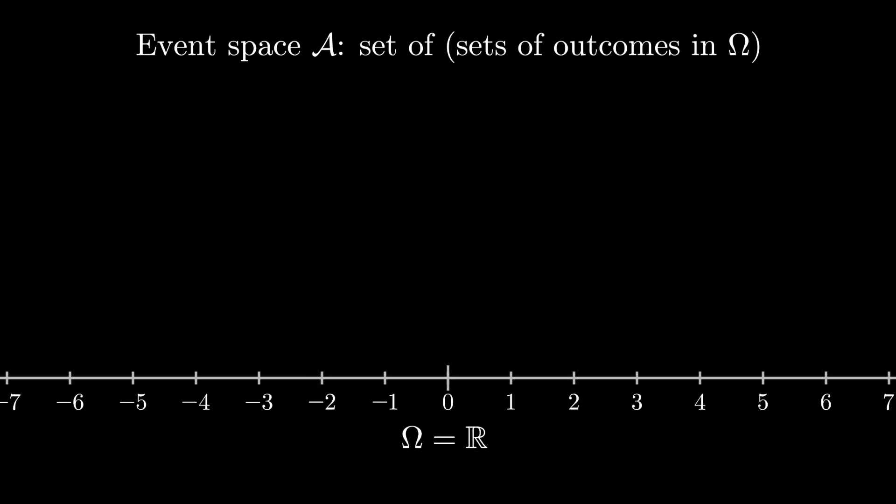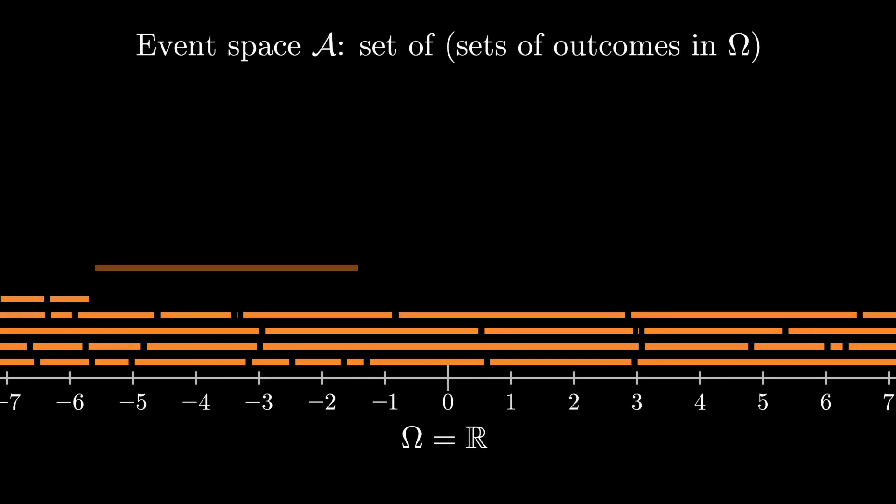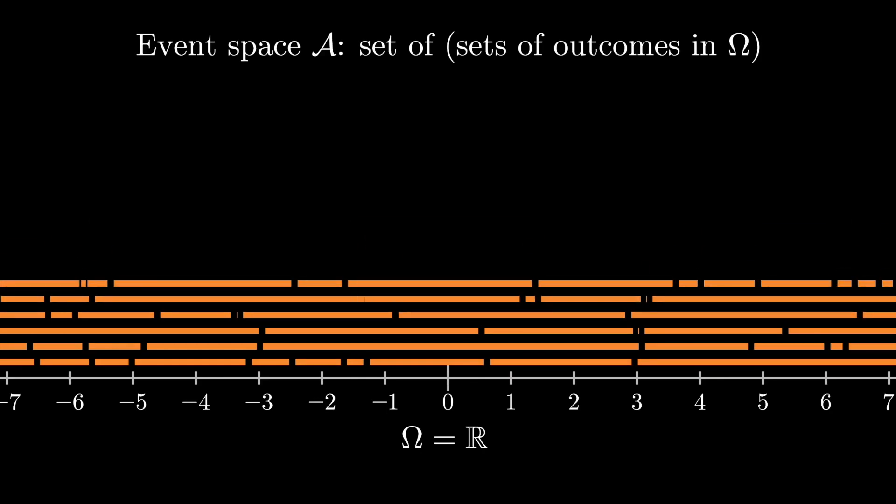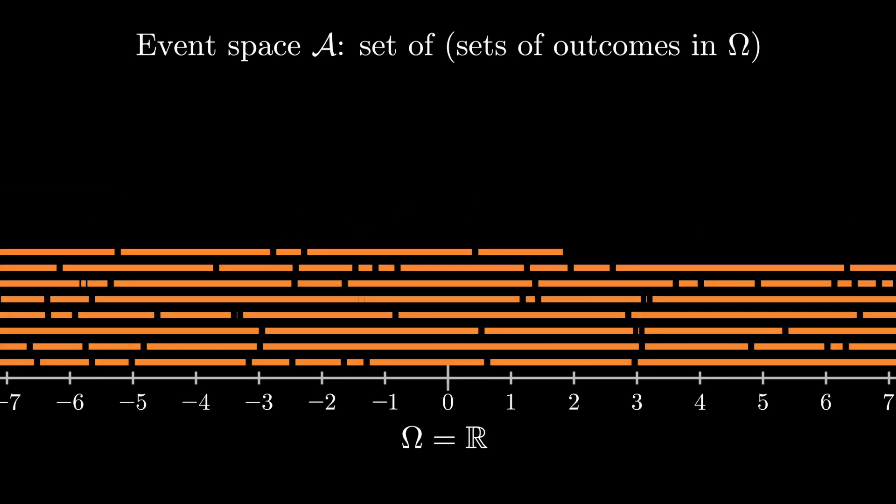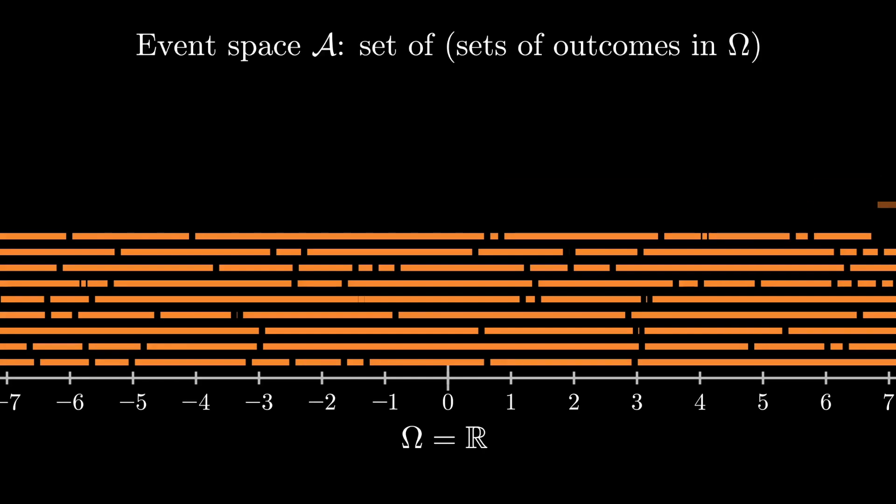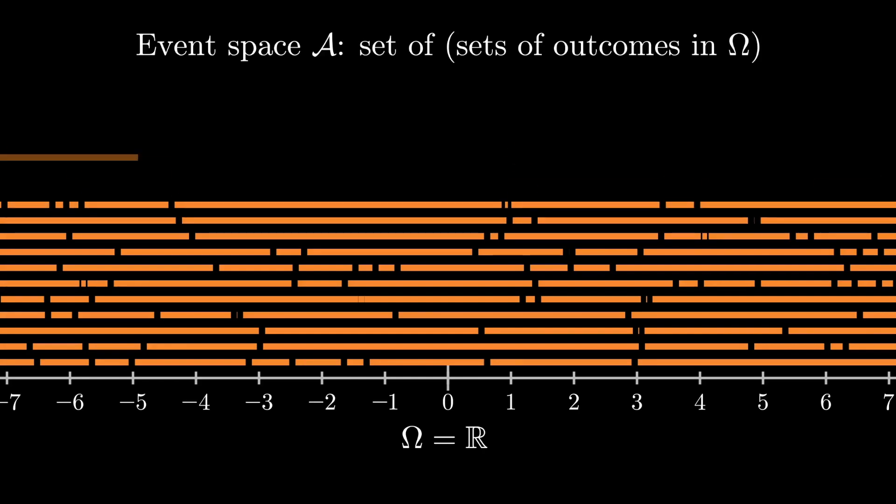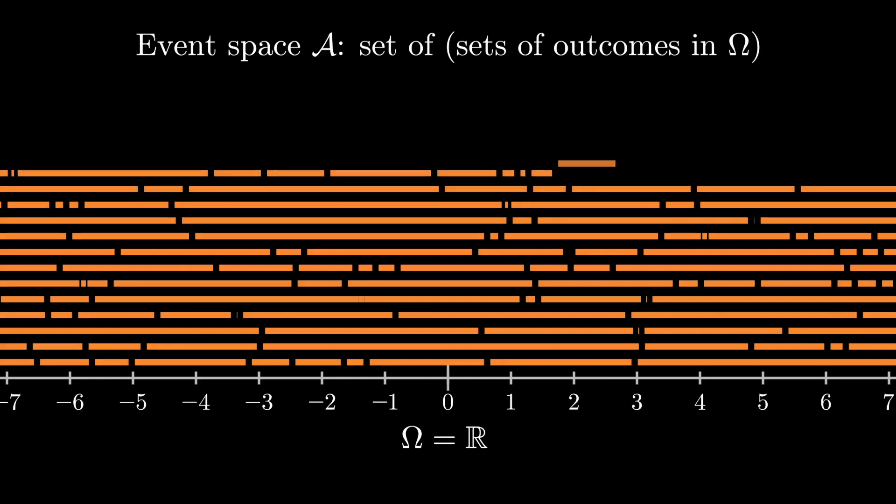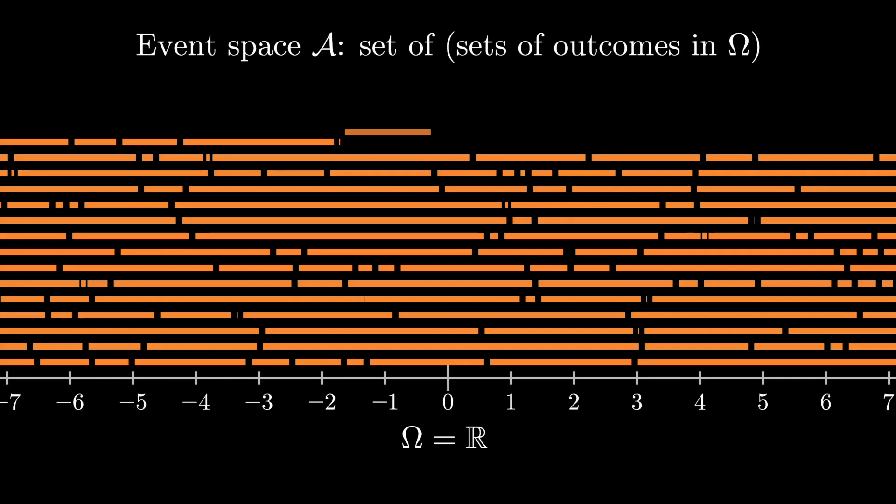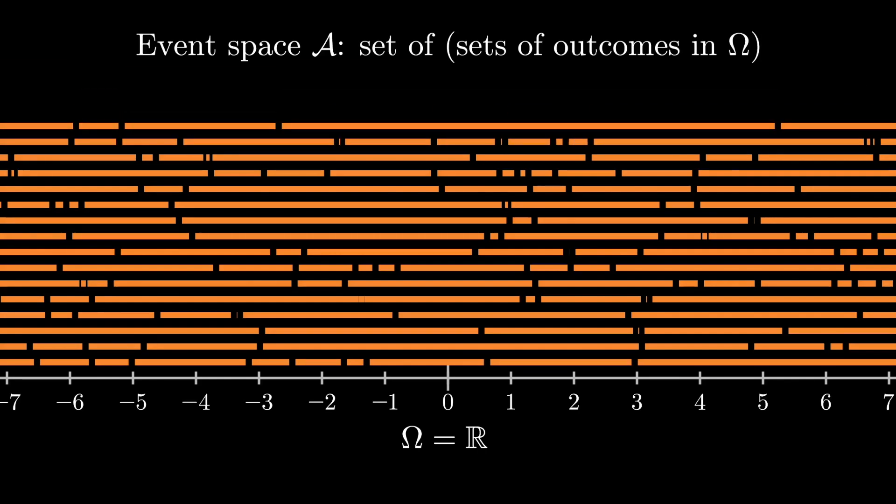Thinking rigorously about event spaces and sigma algebras for the real line and other continuous spaces turns out to be a little bit more involved. The mathematical area of measure theory is in part motivated by these kinds of problems. We're not going to do any measure theory here, and we're going to assume that your intuitive notions of integration basically work out. If our sample space is something like the real line, then the main thing we need from our event space is for it to contain all of the intervals that we might encounter.